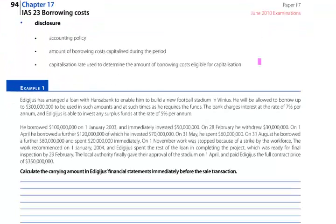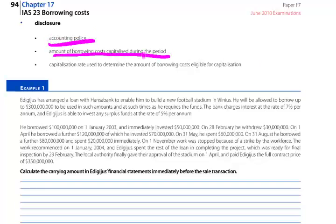The disclosure — as with all disclosure requirements — in the exam, if the question asks you for disclosure, it seems fruitless to try to learn all the disclosure requirements for all the IASs. I would much rather think in terms of: if I were a user of these accounts, what information would I like to know about borrowing costs? Well, I'd certainly want to know the accounting policy, the amount of borrowing costs capitalised during the period, and even the capitalisation rate used to determine the amount of borrowing costs eligible. Potentially, I might also want to know what period of time there was inactivity, and therefore the company was incurring borrowing costs but not capitalising them.